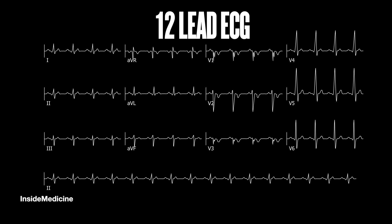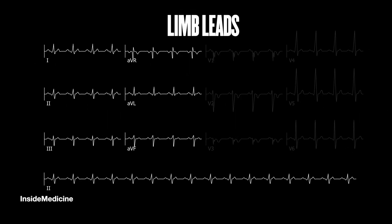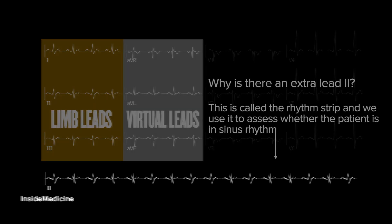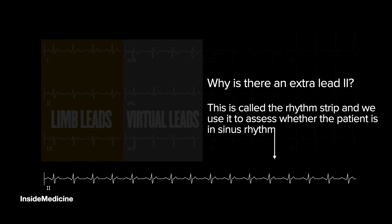Back with the 12-lead ECG, we're now going to look at the limb leads, which measure electrical activity in the vertical plane. There are only three actual limb leads, and then we have three virtual leads: AVR, AVL, and AVF. The AV stands for augmented vector leads — these are leads that the machine works out using vectors. There is also an extra lead 2, called the rhythm strip, which we use to assess whether or not the patient is in sinus rhythm.